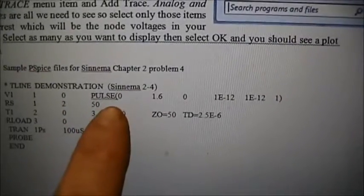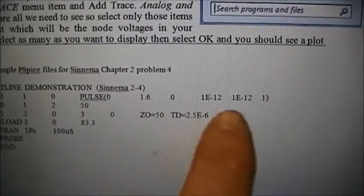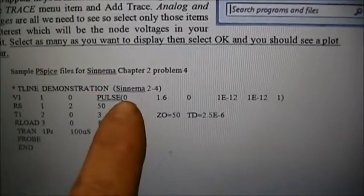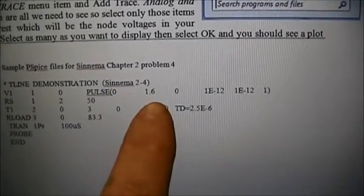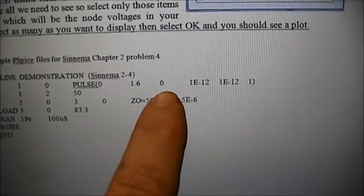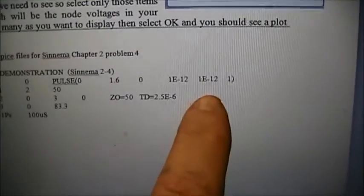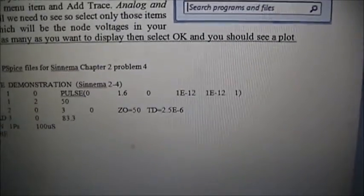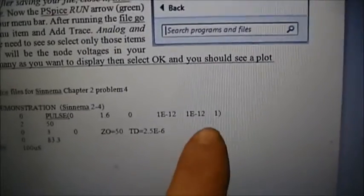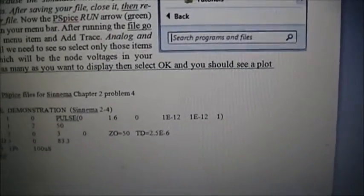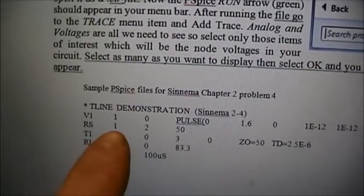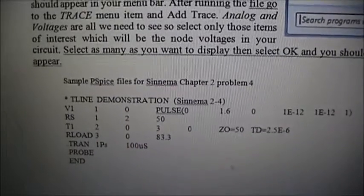The next line is our voltage source. We have a source that we've created between nodes 1 and 0. And it's going to be a pulse signal. The numbers shown here are detailed in the handout. This is the starting voltage of 0 volts. The pulse voltage of 1.6 volts. This is when that pulse starts, and we say time 0. The rise and fall time at 1 picosecond. We want to look at very fast rise times. The last number is the length of the pulse, which is 1 second. Now we have the RS, or the source impedance, 1 to 2 of 50 ohms.